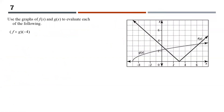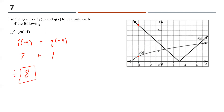This is a function operations question: use the graph of f(x) and g(x) to evaluate f plus g of negative 4. This literally means f(negative 4) plus g(negative 4). From the graph, f(negative 4) equals 7 and g(negative 4) equals 1. So the answer is 7 plus 1, which equals 8.